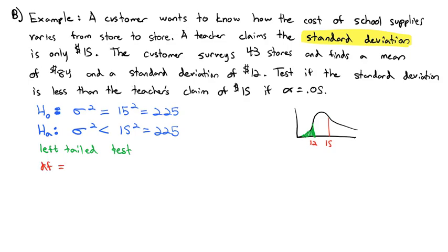First, we need to know the degrees of freedom. The sample size, minus 1. 43 minus 1, we've got 42 degrees of freedom.